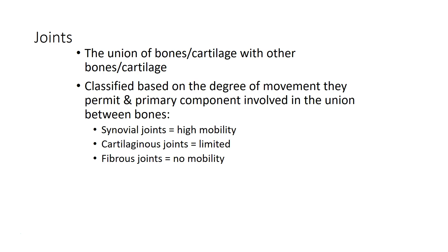Generally speaking, we have very mobile joints referred to as synovial joints — these would be most of the joints you think of, like at your knees, elbows, and fingers. We have cartilaginous joints with less mobility, like between the vertebrae or connections from the ribs to other parts of the body. And then we have fibrous joints, which you wouldn't think of as joints at all — like in the adult skull where the bones are basically fused together; that connection is a fibrous joint.